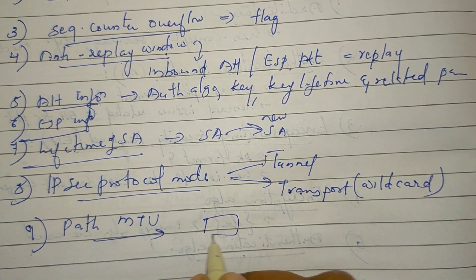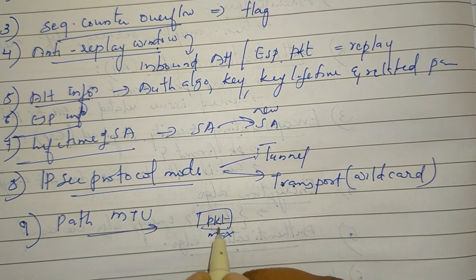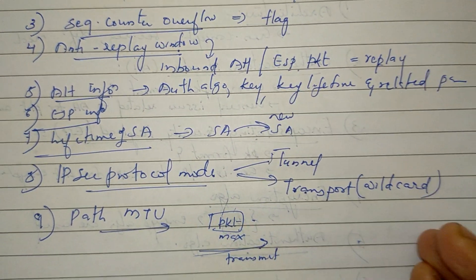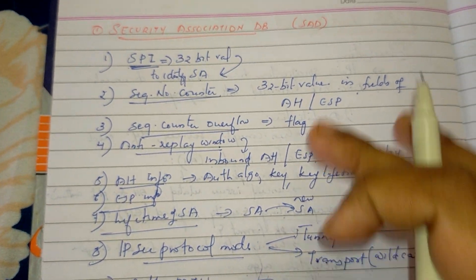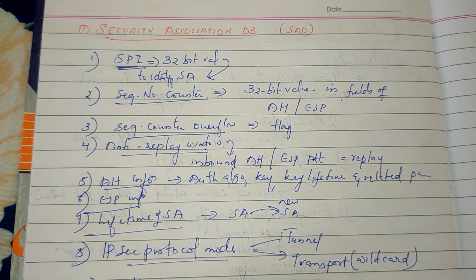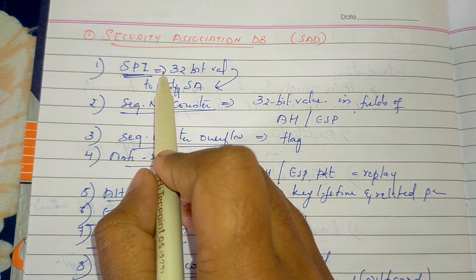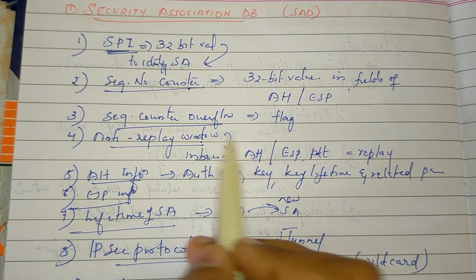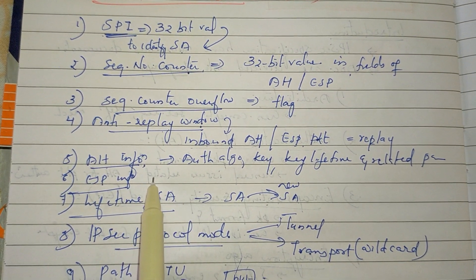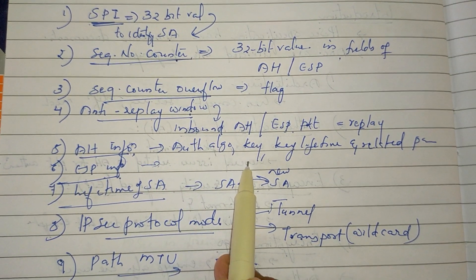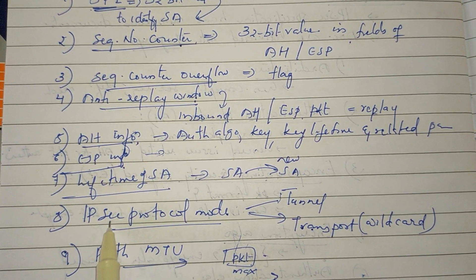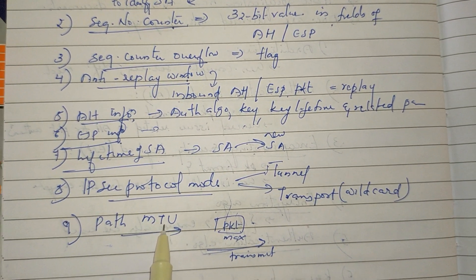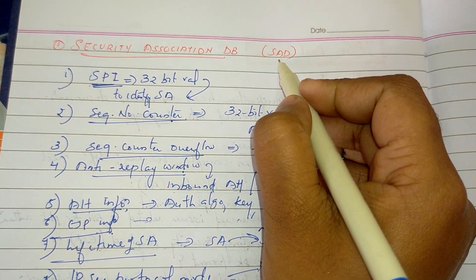The final parameter is Path MTU — the Maximum Transmission Unit, which is the maximum size of a packet that can be transmitted without fragmentation. This concludes the Security Association Database (SAD).